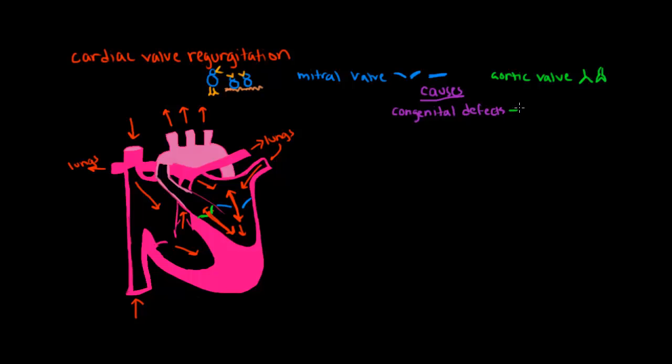In aortic valve regurgitation, a very common defect is that you have two leaflets in your aortic valve instead of three. These conditions can also be caused by scarring on the valve as a result of healing after endocarditis, which is an infection of the heart, or after rheumatic fever.